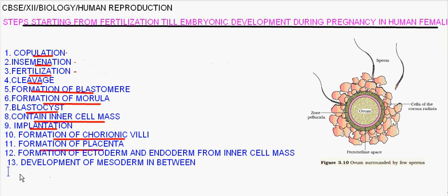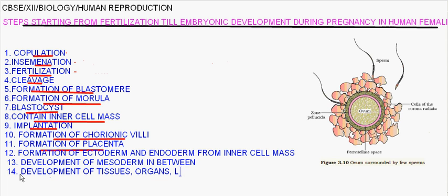Fourteenth step is formation and development of tissues leading to formation of organs. Later, limbs and other body parts are formed in the fetus from ectoderm, endoderm, and mesoderm.